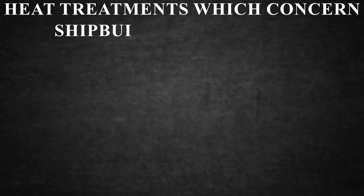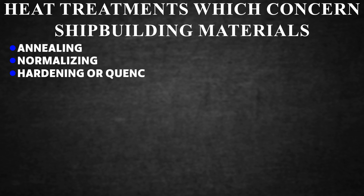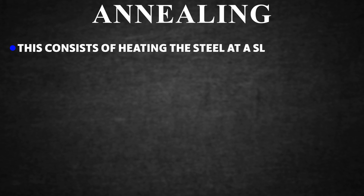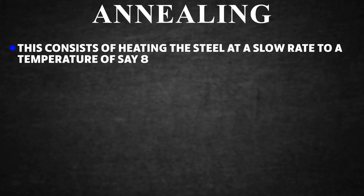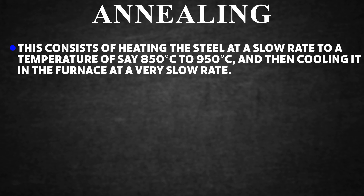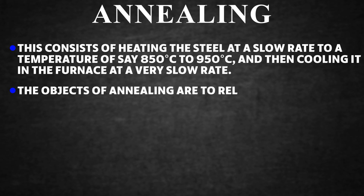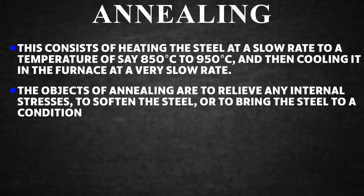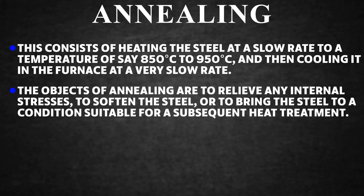Heat treatments relevant to shipbuilding materials include: annealing, normalizing, hardening or quenching, tempering, and stress relieving. Annealing consists of heating the steel at a slow rate to approximately 850°C to 950°C, then cooling it in the furnace at a very slow rate. The objectives of annealing are to relieve internal stresses, to soften the steel, or to bring the steel to a condition suitable for subsequent heat treatment.